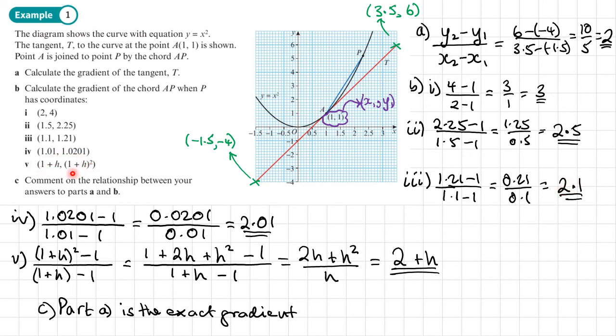If we look at part 5 here, can you see that the gradient is 2 plus h, and h is 1 plus something? The y coordinate is that 1 plus something squared. So if we make that h small and make this gap really, really small, what happens?